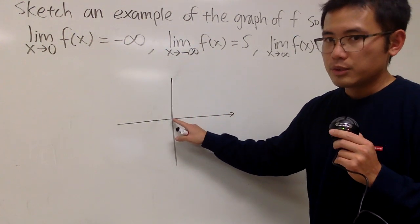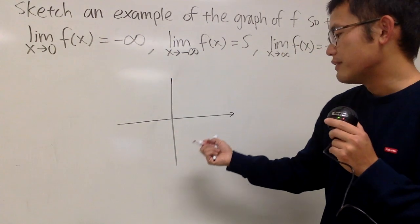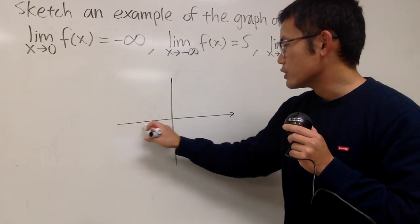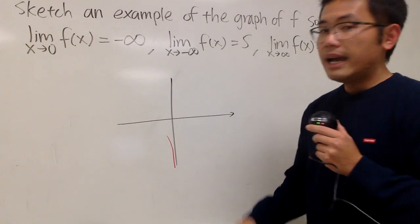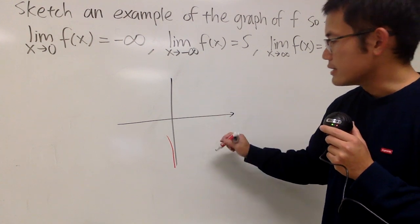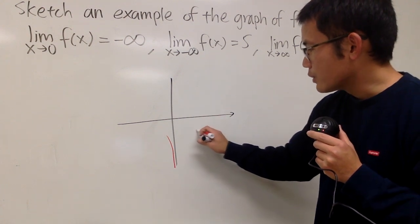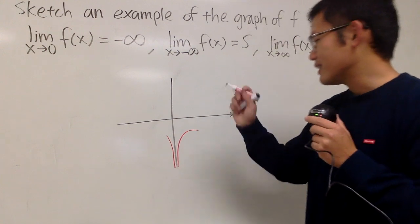Here is when x equals 0. When x is approaching 0 from the left-hand side, the graph has to go straight down, so it looks like this. Similarly, when you're going towards 0 from the right-hand side, the function will go like this, somewhat like this.